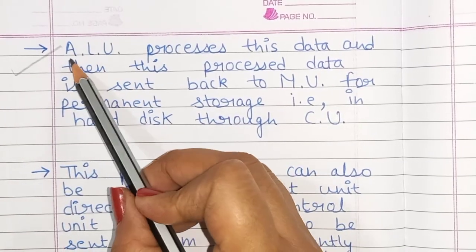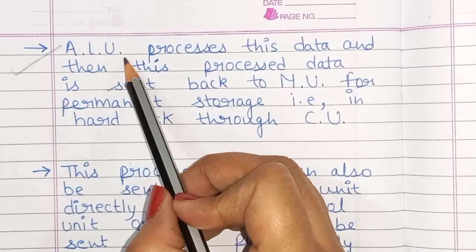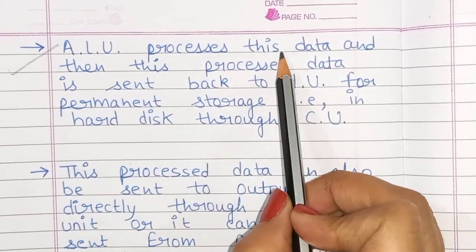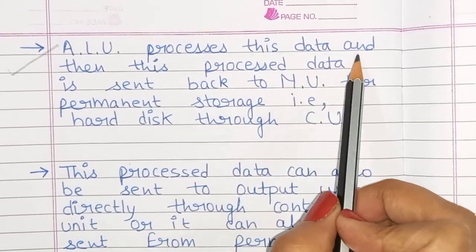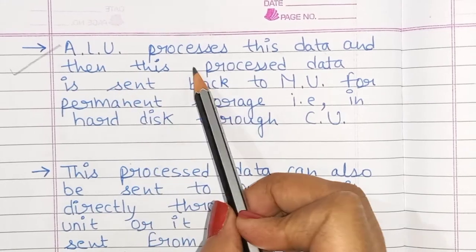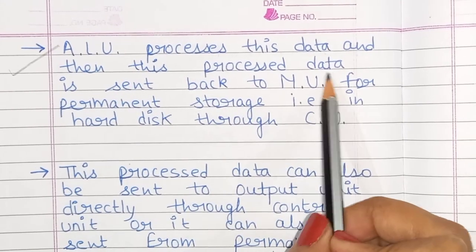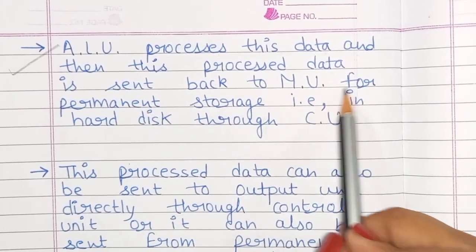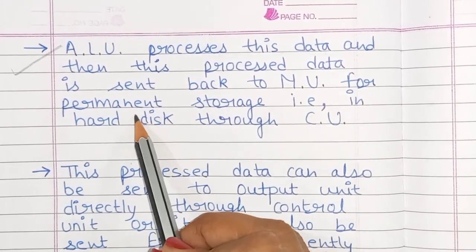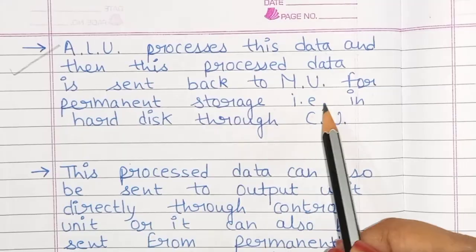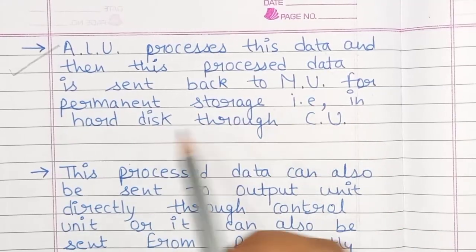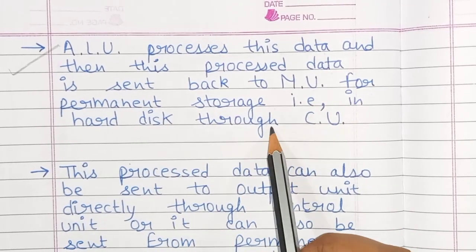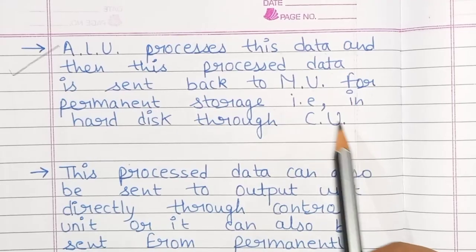The ALU — arithmetic and logic unit — processes this data, and then the processed data is sent back to the memory unit for permanent storage, for example in the hard disk, through the control unit.